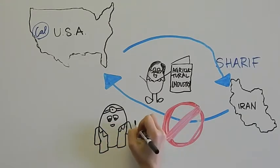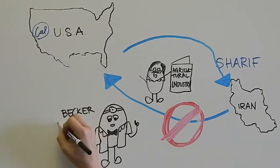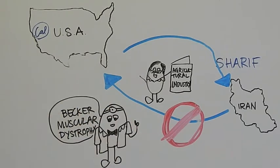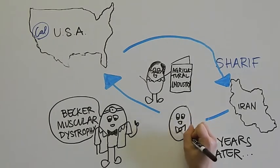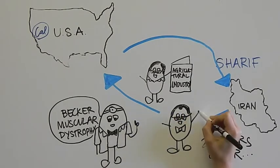Around this time, he was formally diagnosed with Becker muscular dystrophy. About 20 years later, Jafar's son Sharif was able to return to the U.S. to study the very disease that affects his father.